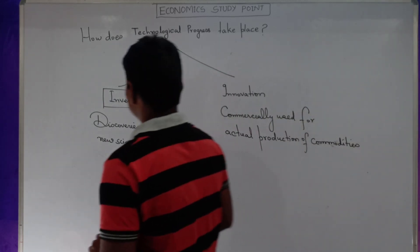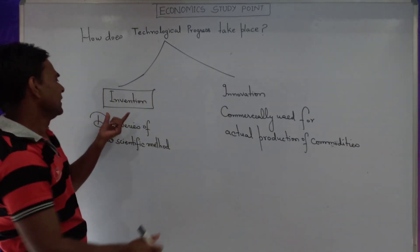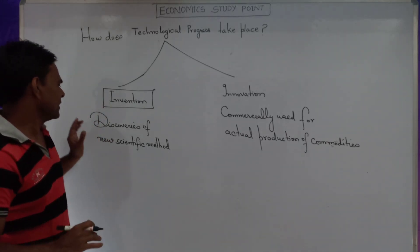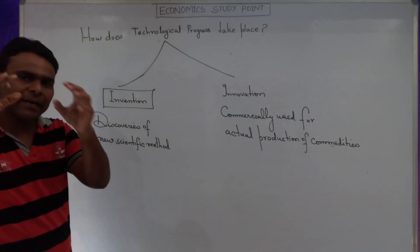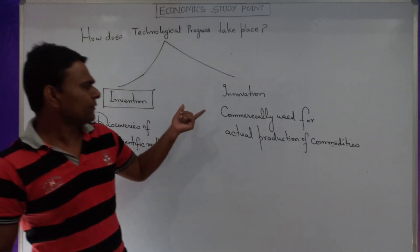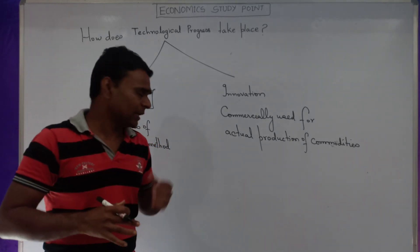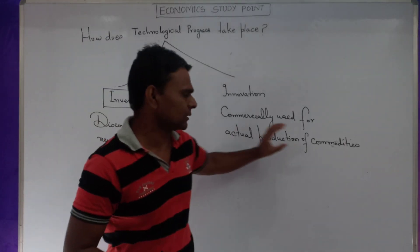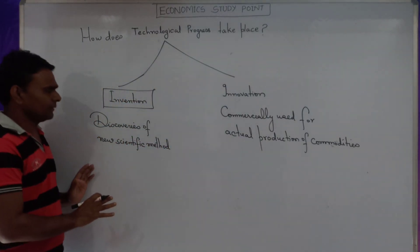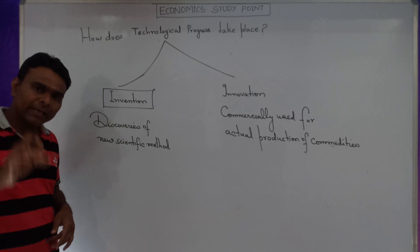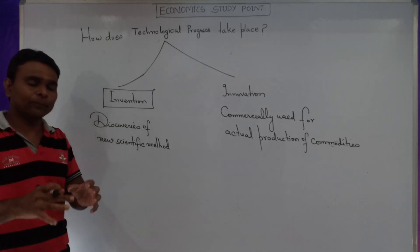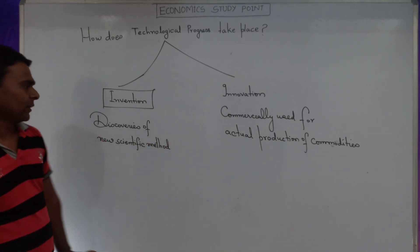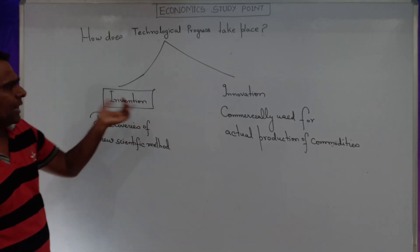The difference between invention and innovation: invention refers to the discovery of new scientific ideas or methods. Innovation means those new scientific ideas or methods are commercially used for actual production of commodities. Sometimes a new scientific idea may not be economically profitable to be used for actual production of a commodity.